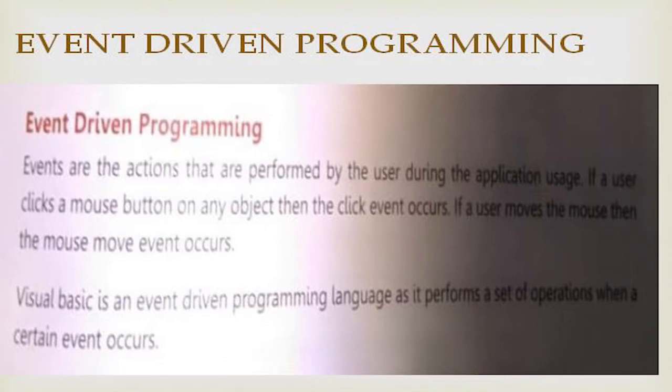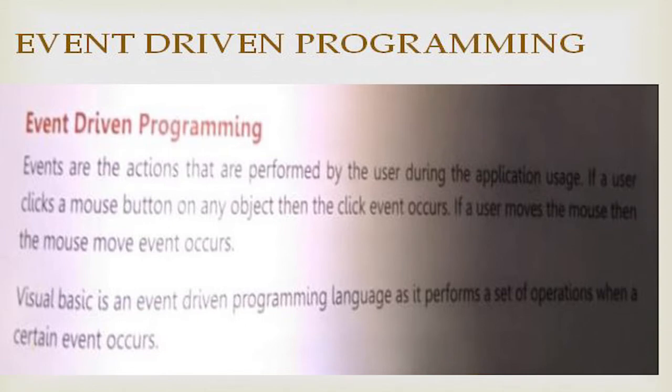Event-driven programming means events are actions performed by the user during application usage. If the user clicks a mouse on any object, a click event occurs. When you click something to open it, that click action is called an event. If a user moves the mouse, the mouse move event occurs — meaning if you move the mouse from one place to another, the mouse move event will occur.